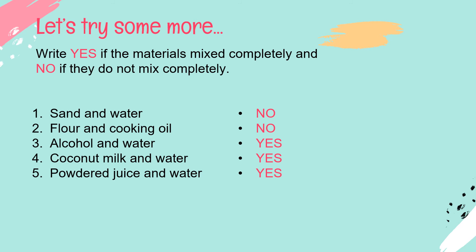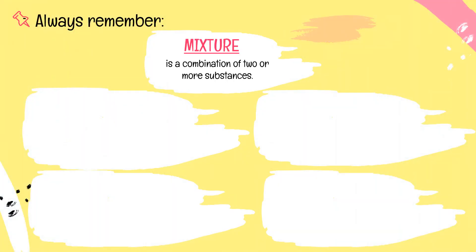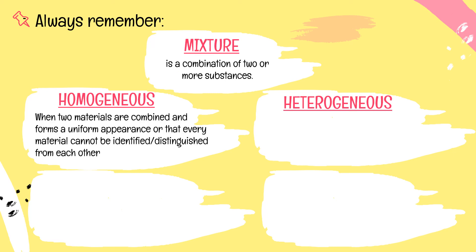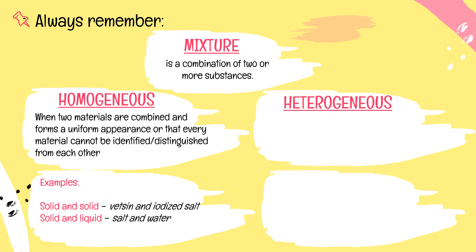You did very well! Always remember: a mixture is a combination of two or more substances and it has two types — homogeneous mixture and heterogeneous mixture. Homogeneous is when two materials are combined and form a uniform appearance so that every material cannot be identified or distinguished from each other. Examples: solid and solid like vetsin and iodized salt; solid and liquid like salt and water; liquid and liquid like soy sauce and vinegar.